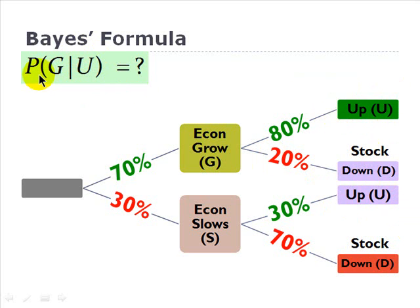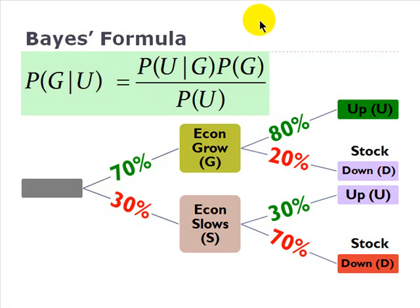What is now the conditional probability that the economy will grow? We know the unconditional probability of the economy growing to 70 percent before the year. But after the year, if we have new information that the stock went up, this changes our perspective or the probability that the economy grew.